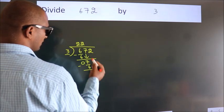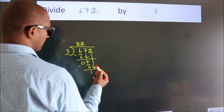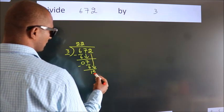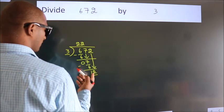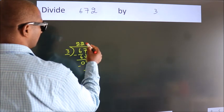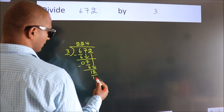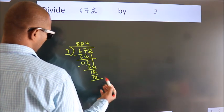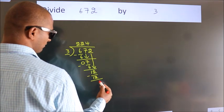After this, bring down the beside number. So, 2 down. So, 12. When do we get 12? In the 3 table. 3 times 4 is 12. Now, we subtract. We get 0.